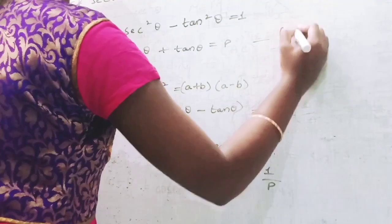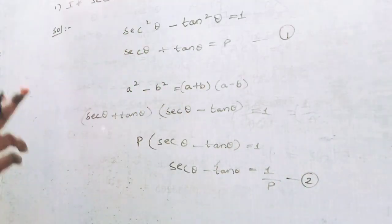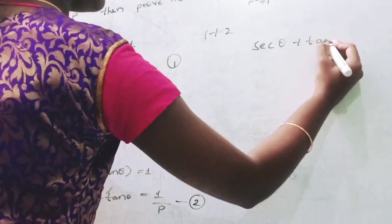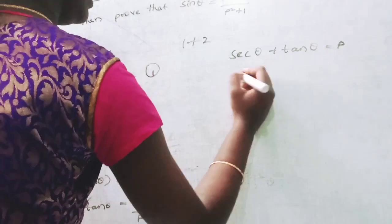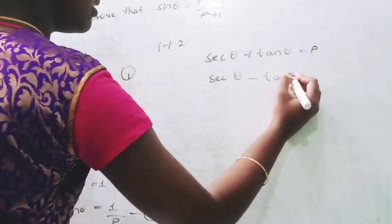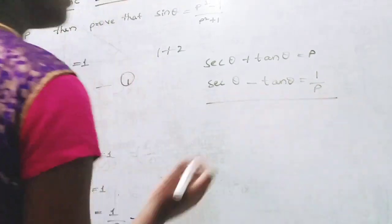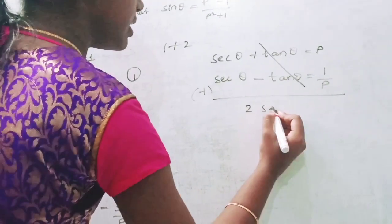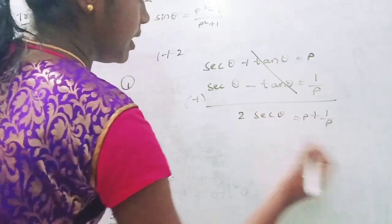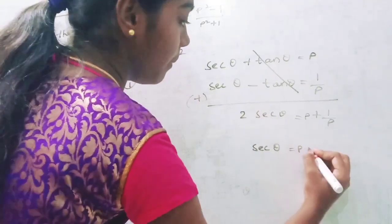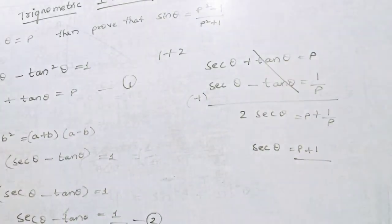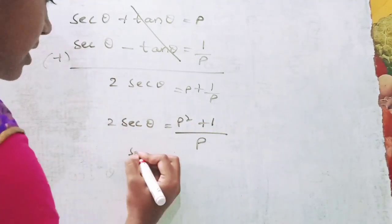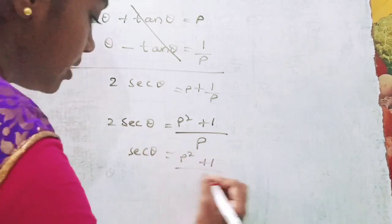Name equation 1 as sec θ + tan θ = P, and equation 2 as sec θ - tan θ = 1/P. Adding equations 1 and 2: 2 sec θ = P + 1/P. Taking LCM, 2 sec θ = (P² + 1)/P, so sec θ = (P² + 1)/(2P). This is equation 3.